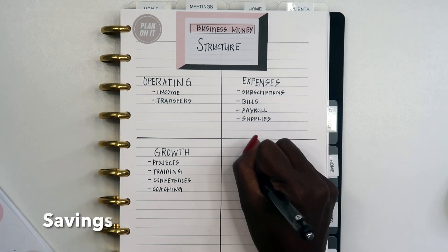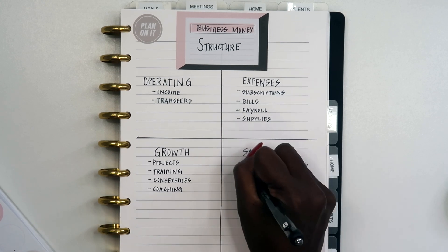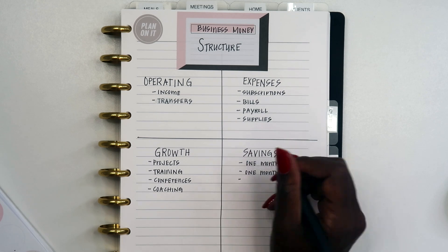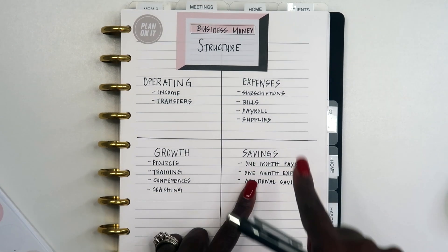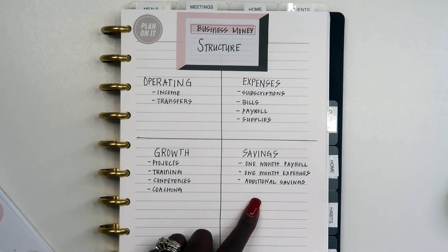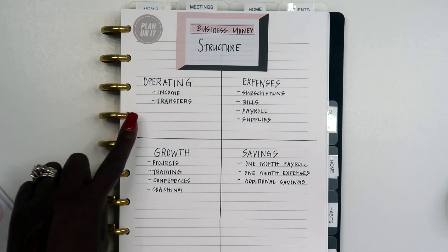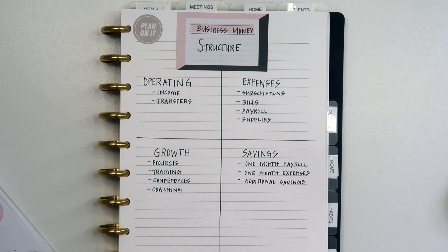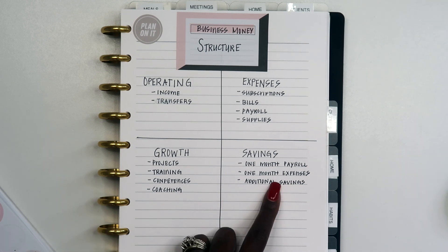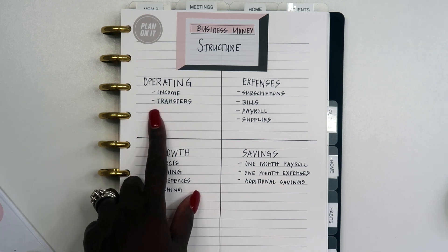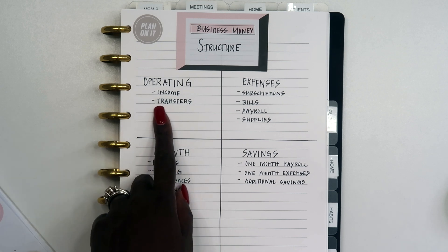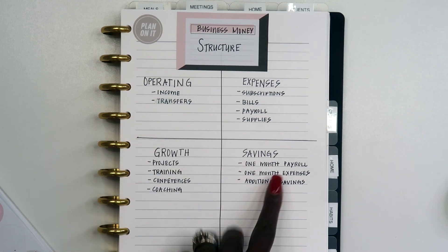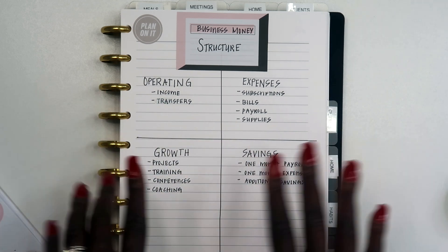The last account is your savings account, and it's for saving for a rainy day. I like to have one month of payroll and one month of expenses needed to run my business in this account, along with any additional savings. This account can really help you if you run into any issues with income or sales. The ultimate goal is to have six months of savings here, because you want money set aside in case you get sick, need to shut down for a period of time, or hit a rough patch.